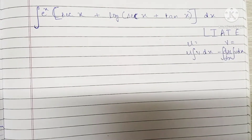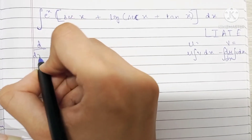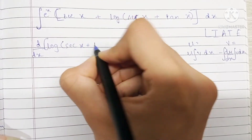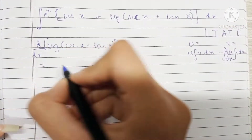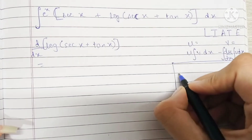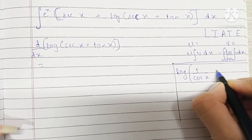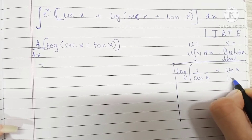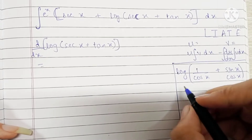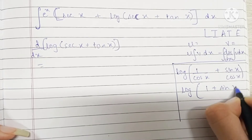First of all, we're going to make an observation. Let's find out the differentiation of log(sec x plus tan x). We know that log(sec x plus tan x) can be written as log of (1/cos x plus sin x/cos x), because sec is 1/cos and tan is sin/cos, which means we can combine this and write it as log of (1 plus sin x) upon cos x.